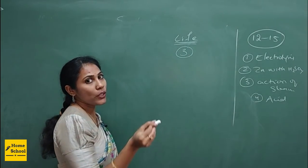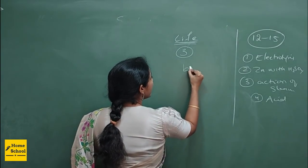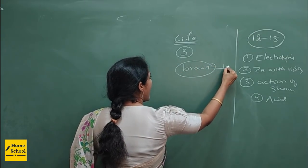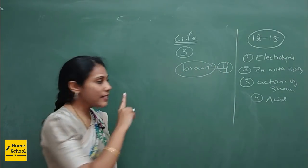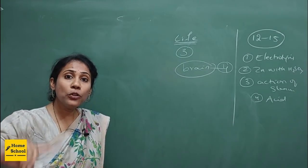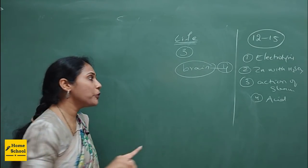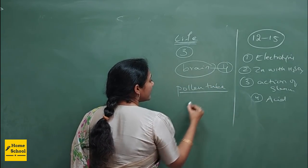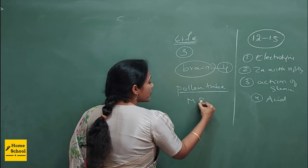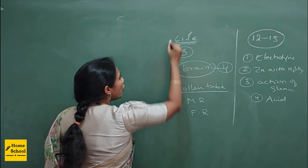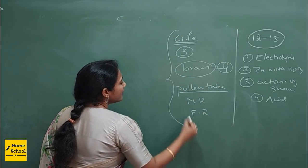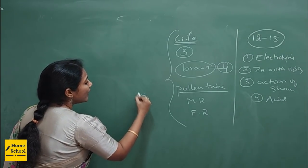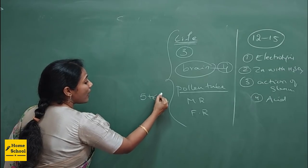From the control and coordination chapter, the human brain diagram is very important — if asked, it carries four marks. From the reproduction chapter, the growth of pollen tube, male reproductive system, and female reproductive system are important. Altogether from the bio part, you can expect around five to six marks from diagrams.